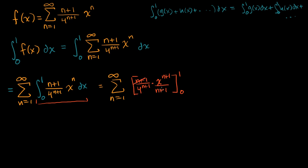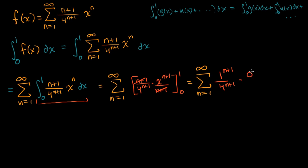Before we evaluate, we can simplify: we have an (n+1) in the numerator and an (n+1) in the denominator, so they cancel. We take the sum from n equals one to infinity, and when x equals one, we get 1 to the (n+1) over 4 to the (n+1), and when x equals zero, we get 0 to the (n+1) over 4 to the (n+1), which is clearly just zero. So that term drops out entirely.